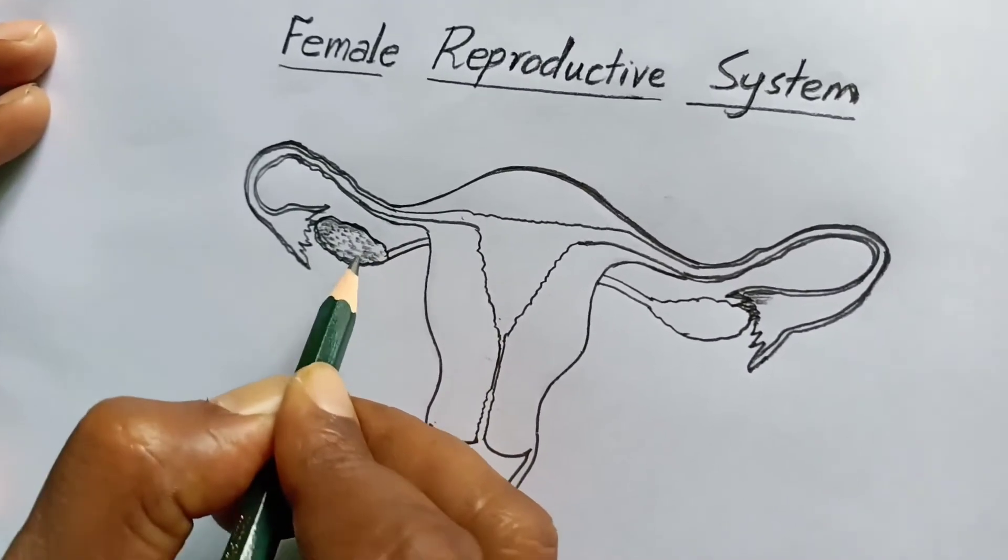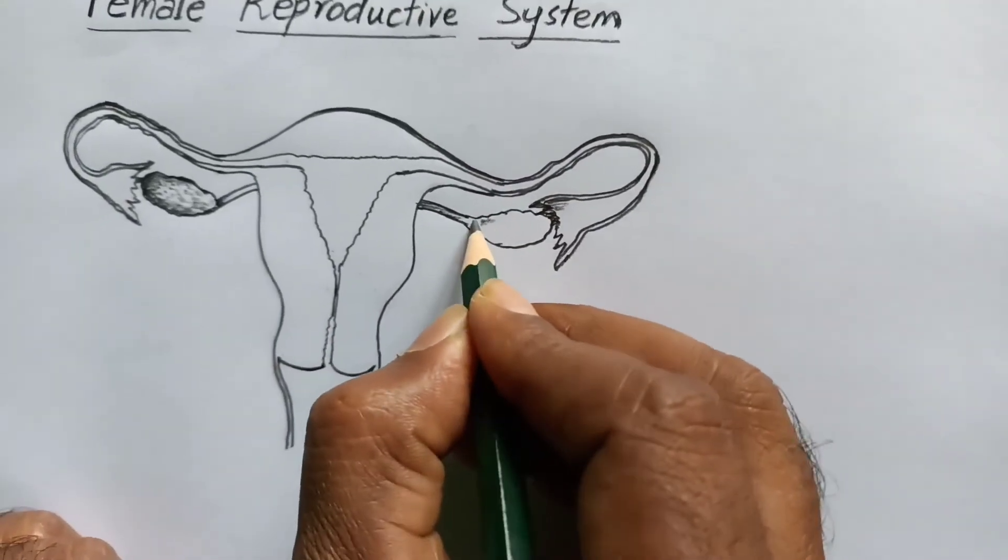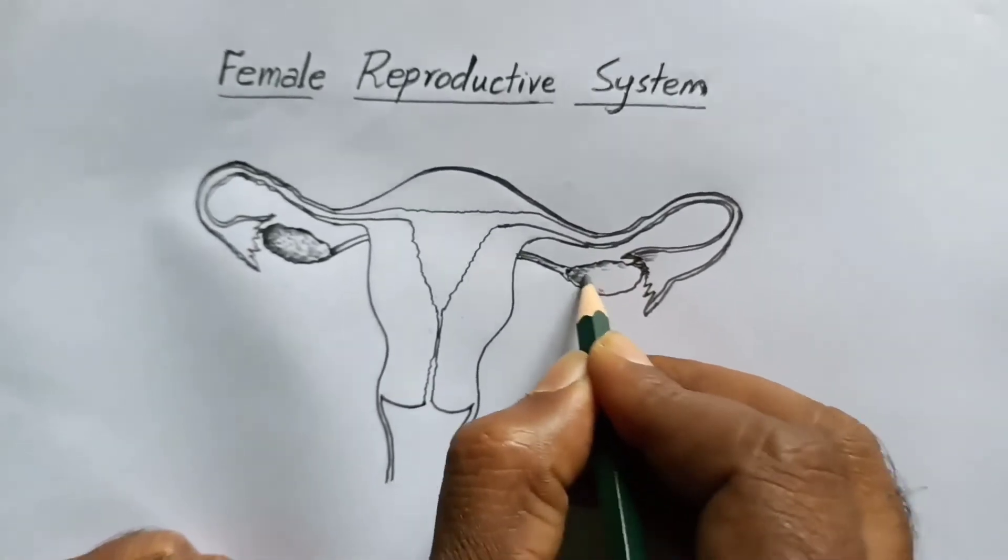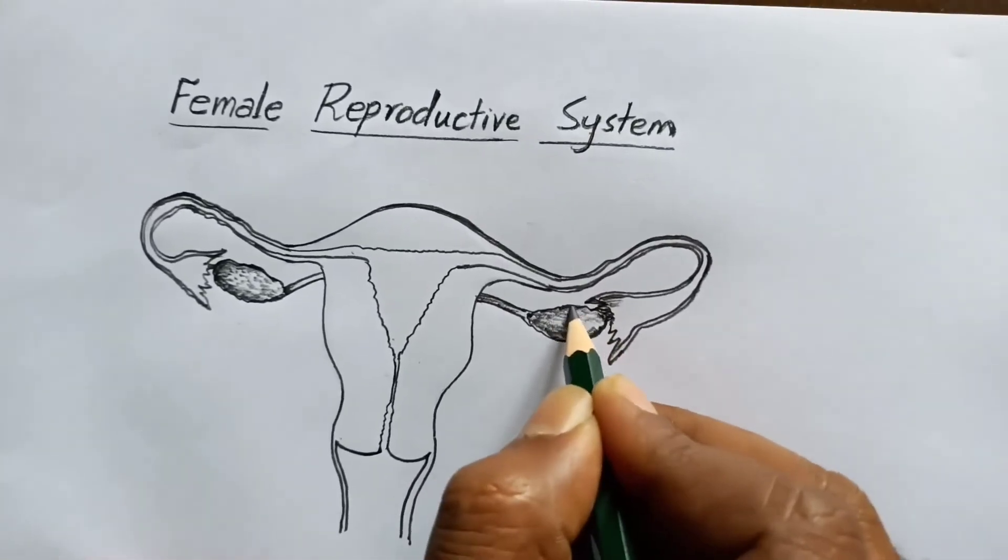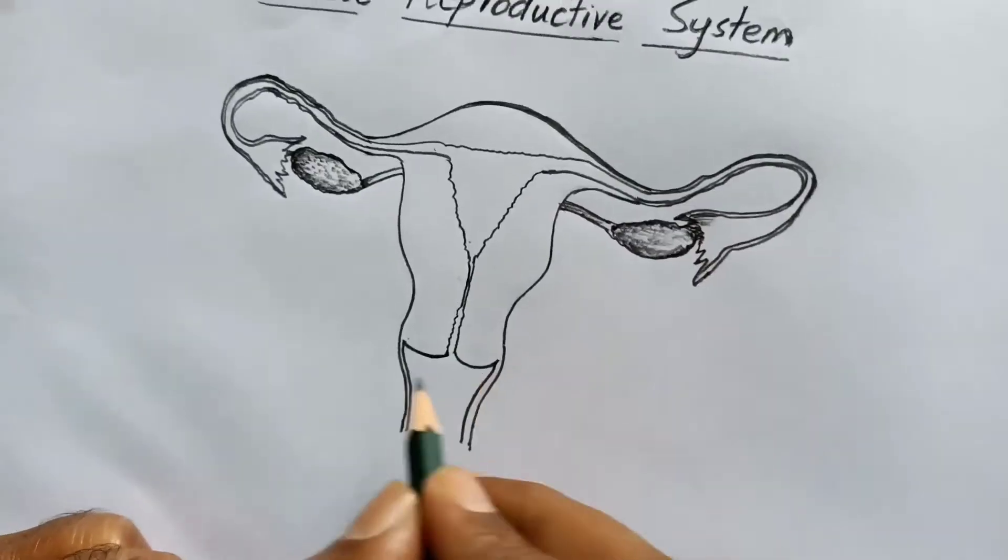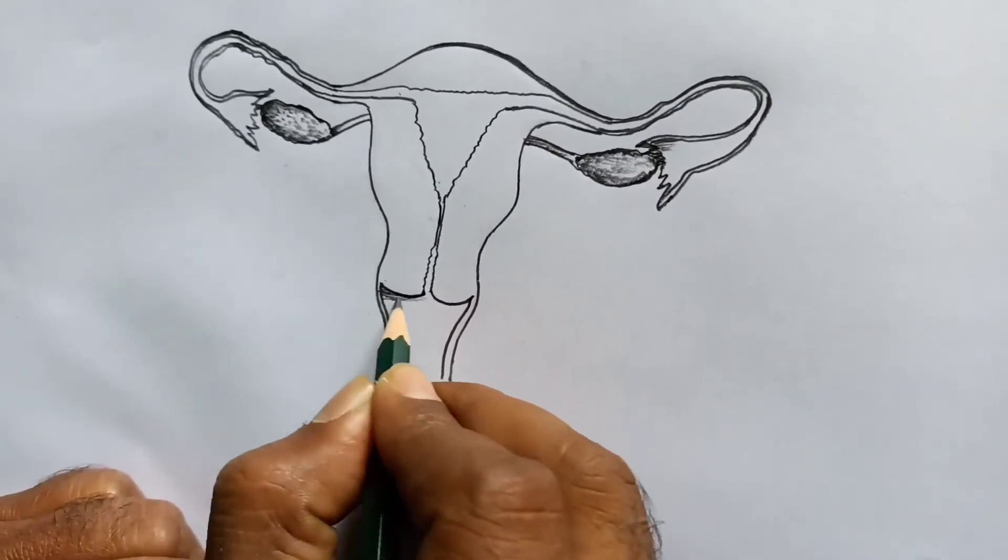To elevate these structures, you draw like this. This is the vagina.